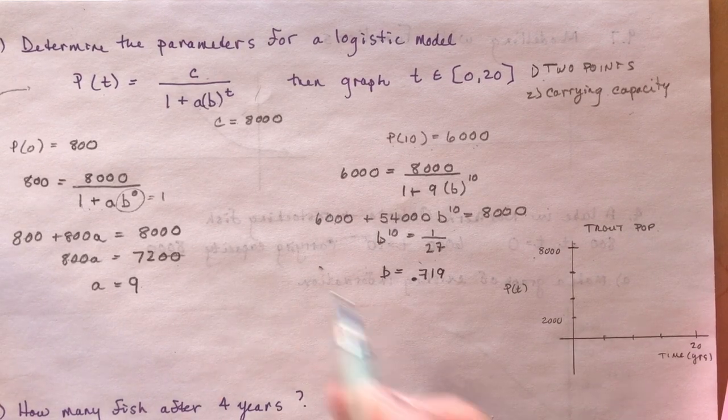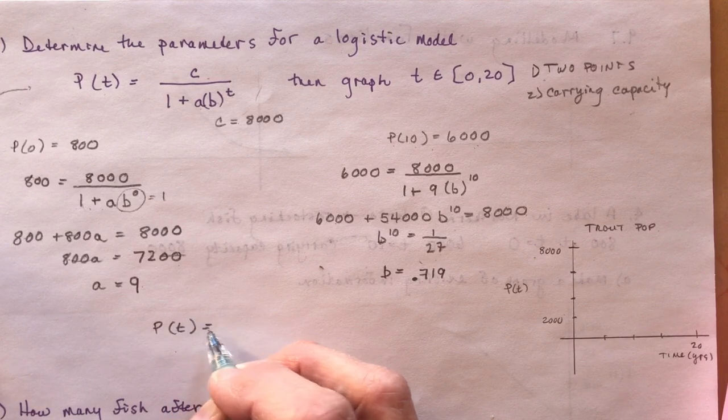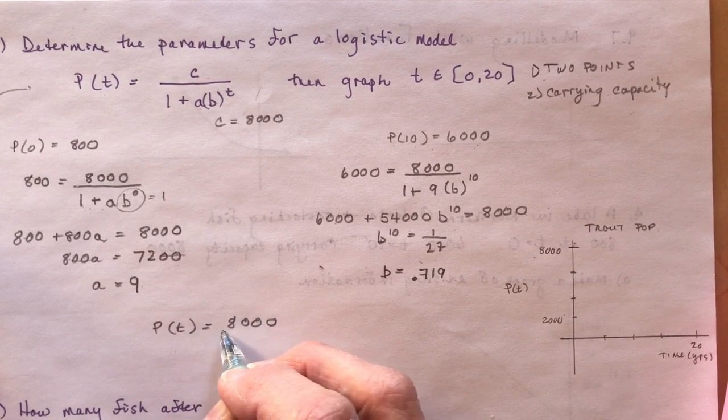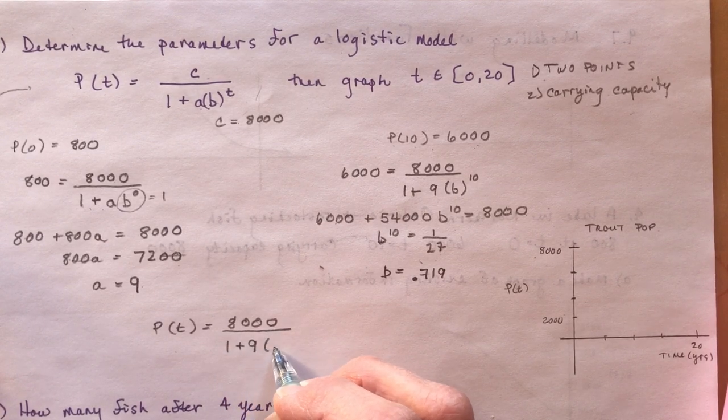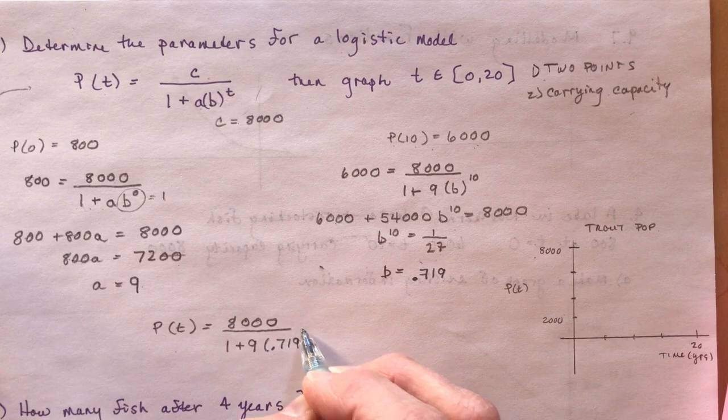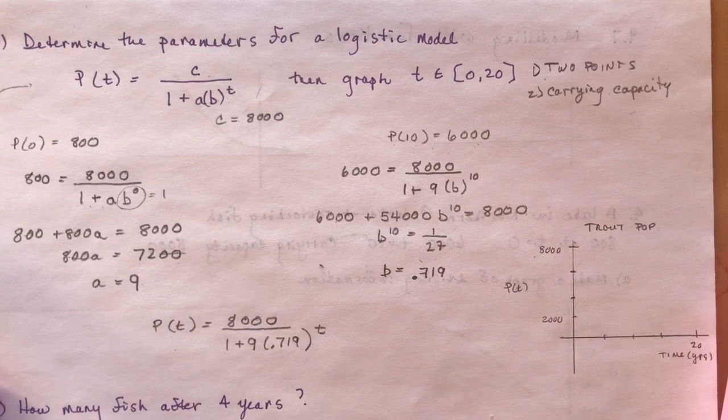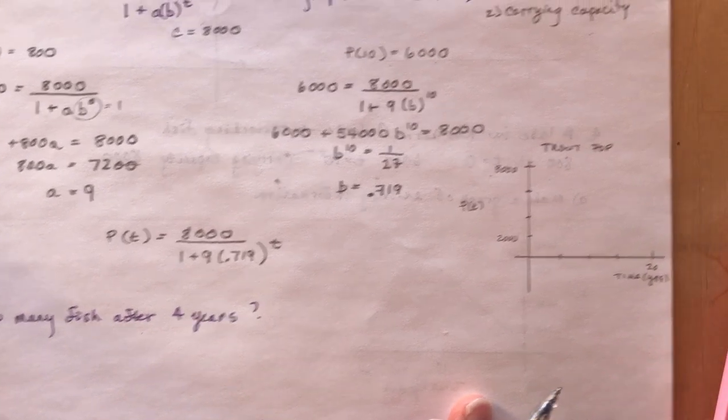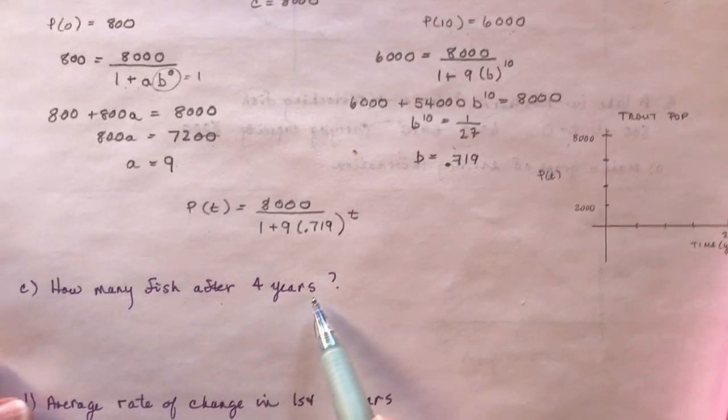So now I can set up this entire equation. I can say population at time t is going to be, this is for our trout population now, 8,000 divided by 1 plus 9 times 0.719 to the power of t. Now how easy was that? Let's hope your teacher gives you a question like that on your unit test because it's pretty simple. And then it said to graph it. Well, let's find the other point here. Let's find one more point here.